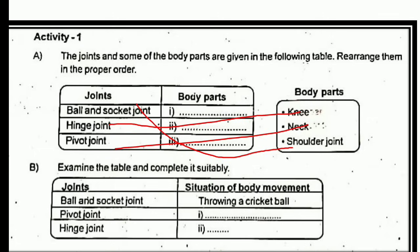We use a ball and socket joint. In the pivot joint, we can move our head to both sides. With the hinge joint, we can fold our leg.